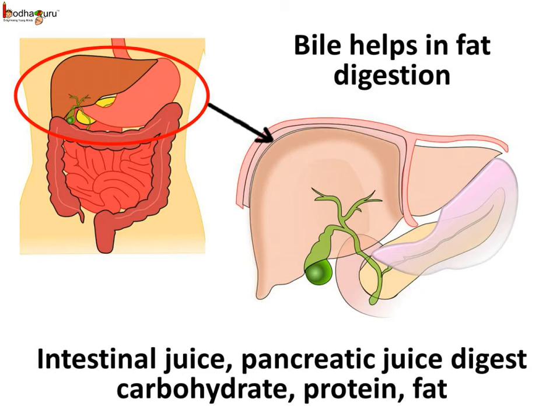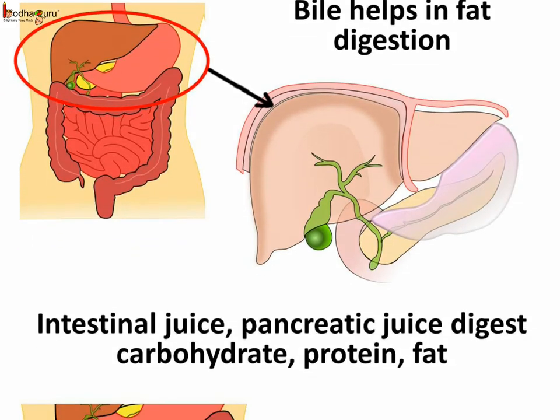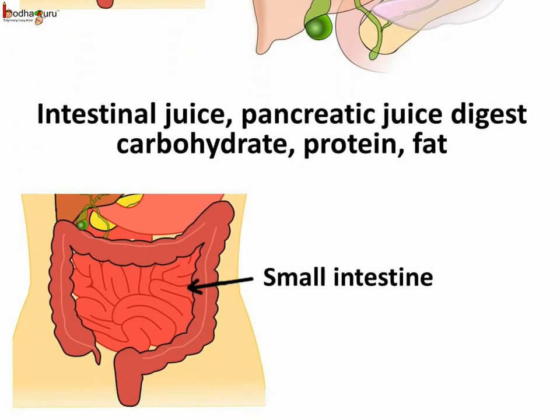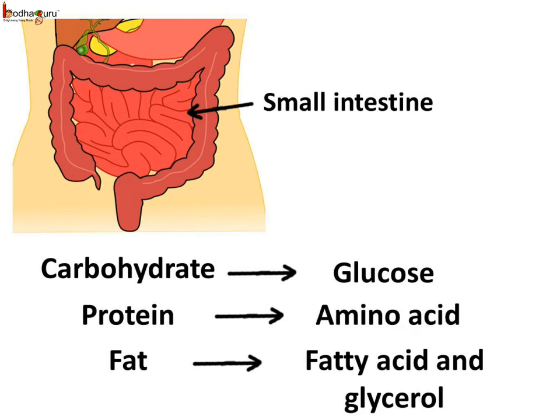The intestinal juice and the pancreatic juice contain the required enzymes to break down carbohydrates, proteins, and fats. Hence, digestion is completed inside the small intestine. So finally, carbohydrates turn into glucose, proteins turn into amino acids, and fats turn into fatty acid and glycerol.